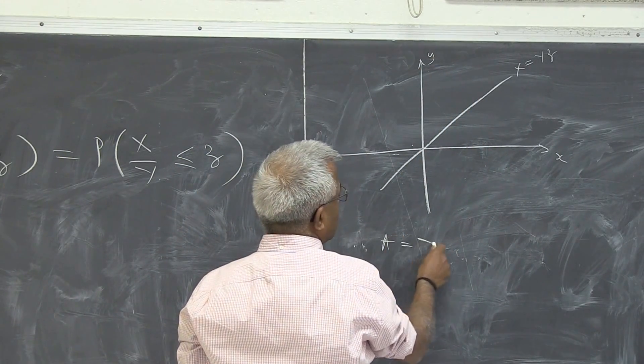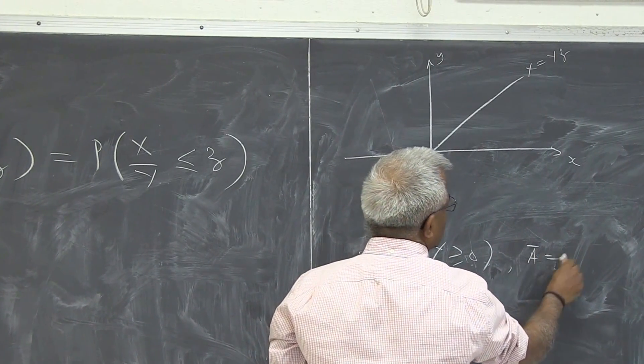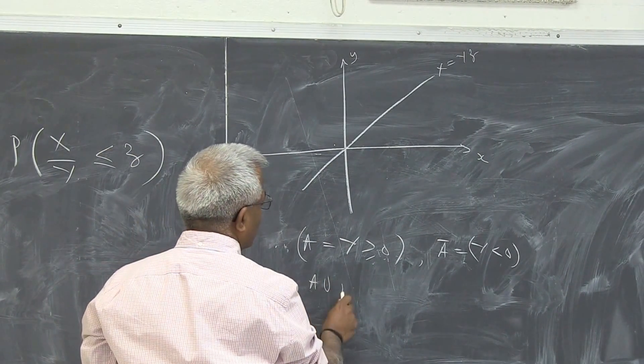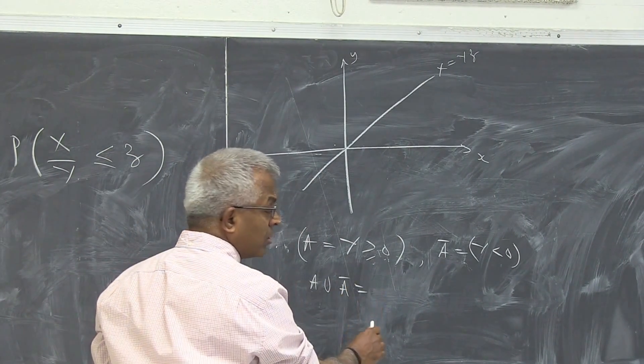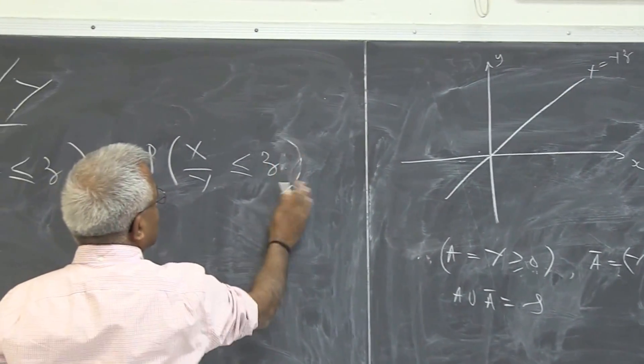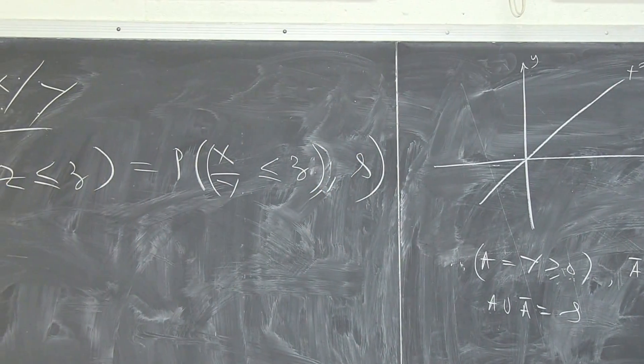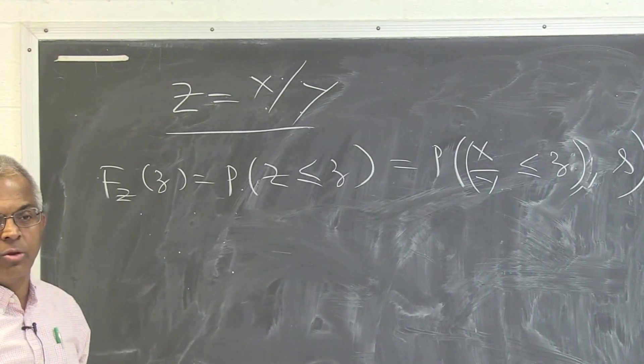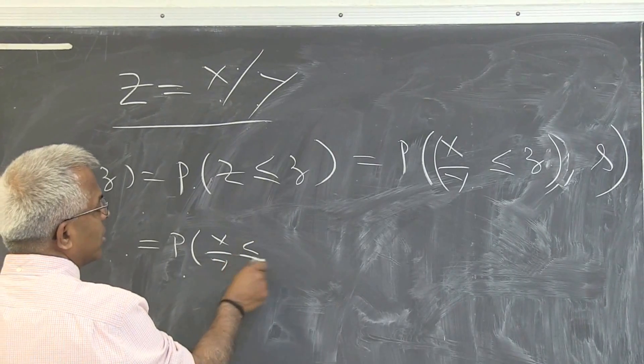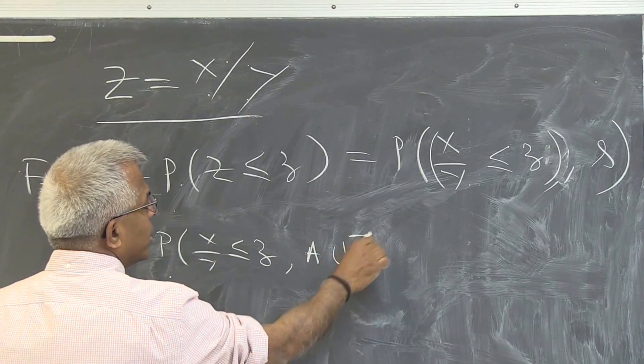So if I define a to be y positive, a complement is of course y negative, right? And a union a complement is what? Anybody? Whole set, right? So if I write, if I do an intersection with the whole set here, it does not really matter, right? Whole set, nothing, because any event, intersection with the whole set is itself, right?